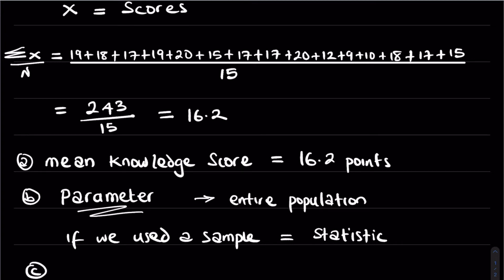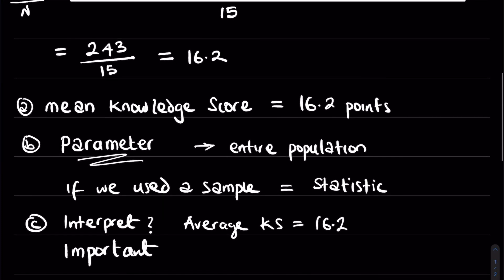Lastly, how do we interpret this finding? Well, it's simple. It just indicates that the average knowledge score in the hospital was 16.2 points, meaning that the typical knowledge score when you see any of the health workers there is about 16.2 for that population.